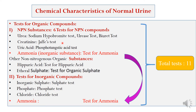For creatinine, we do the Jaffe test. For uric acid, we do the phosphotungstic acid test. And for ammonia, we do the inorganic substance test for ammonia. Ammonia is basically an inorganic substance; however, I have clubbed it into NPN substances — that is non-protein nitrogen substances. The other organic substances which are non-nitrogenous include hippuric acid and ethereal sulfate.